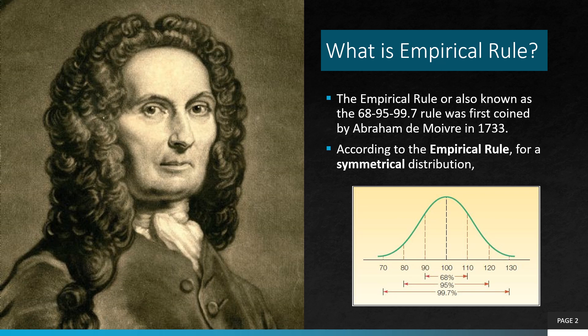So, what is the empirical rule? The empirical rule, also known as the 3 sigma rule, was first coined by Abraham de Moivre in 1733. According to the empirical rule, for a symmetrical distribution, approximately 68% of the data values will lie within ±1 standard deviation of the mean. Approximately 95% will lie within ±2 standard deviations, and almost all observations, or 99.7%, will lie within ±3 standard deviations of the mean.